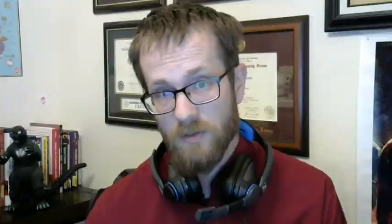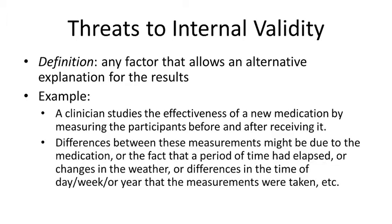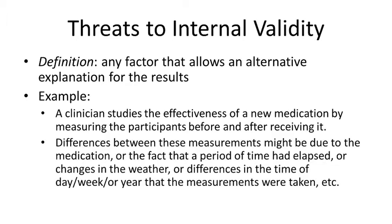When it comes to things that might threaten this validity, there's a long list of potential threats. Particularly when it comes to internal validity, threats to your internal validity are basically any factor that allows for an alternative explanation of your results. For example, let's say you're a clinician studying the effectiveness of a new medication. You measure your participants before and after they receive it — this would be an example of a within-subjects design. You observe some differences between these measurements, but these differences might be due to the medication, or they might be due to something like order effects.